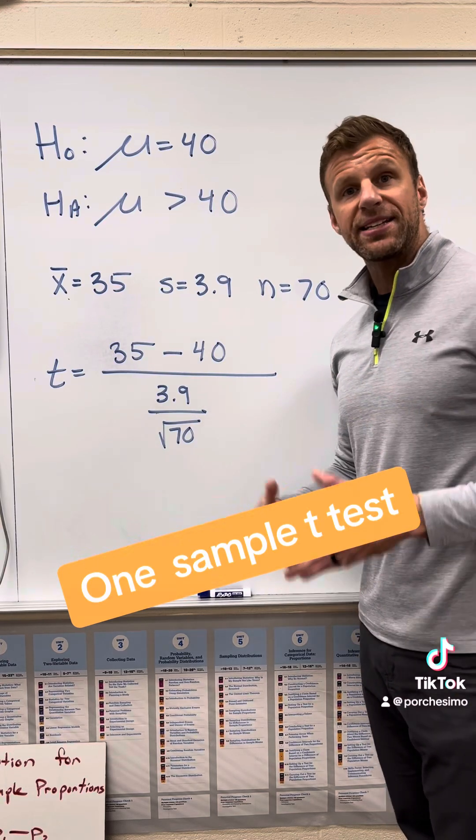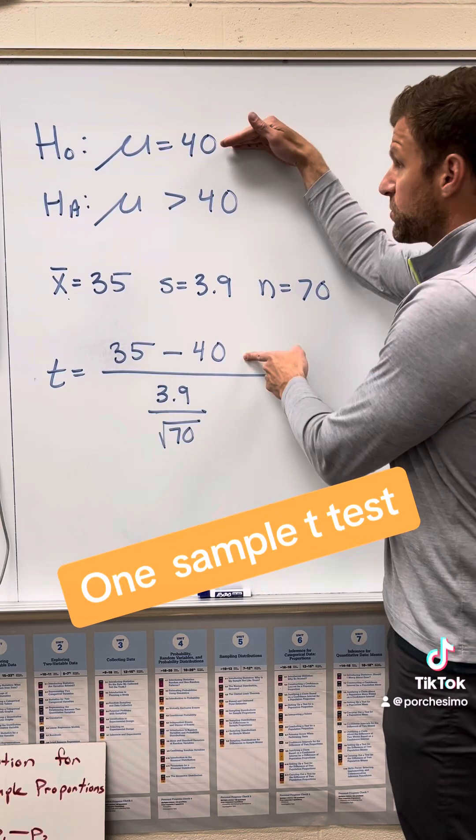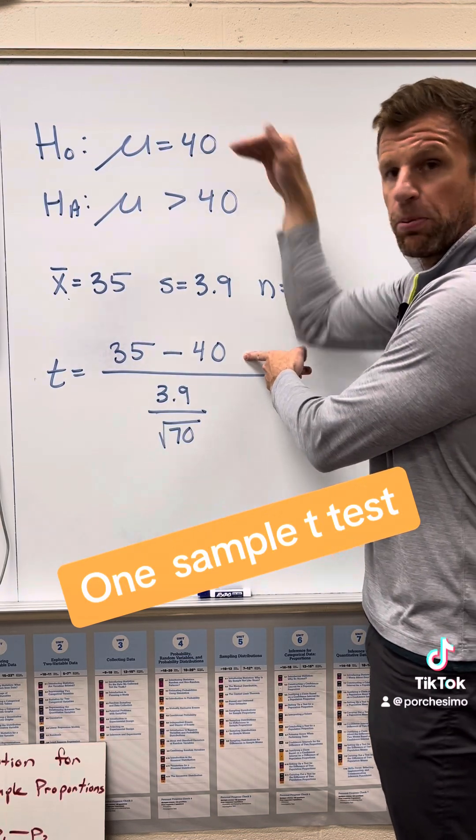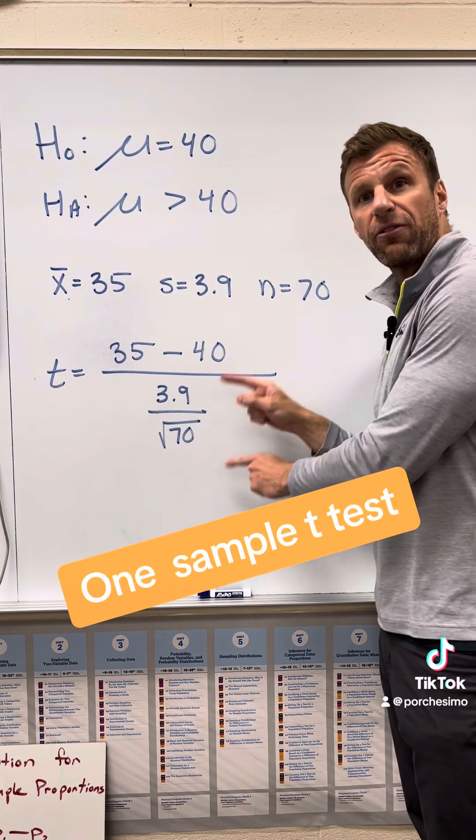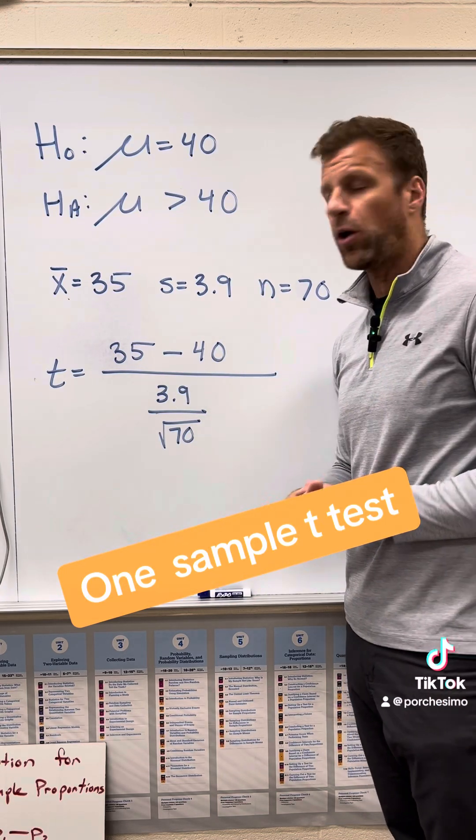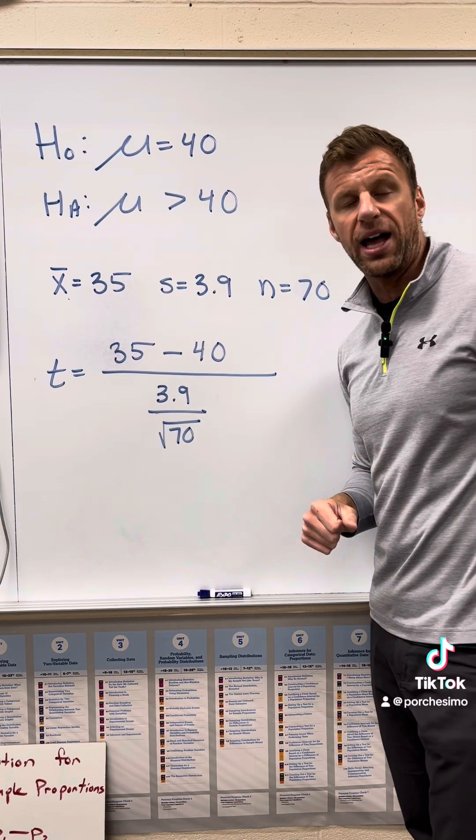So our test statistic can be a t score here. We're going to take our sample statistic, that was the 35, minus what we believe to be true. That's what we thought the parameter was from the null, divided by the standard error. And again, this standard error formula is on the AP Stats formula sheet. It's taking the standard deviation of your sample divided by the square root of your sample size.